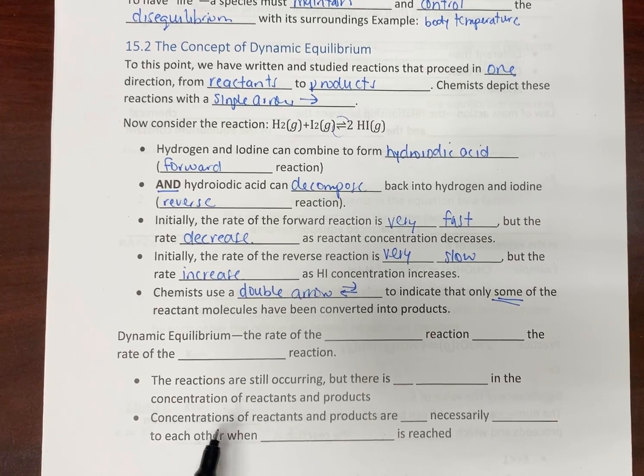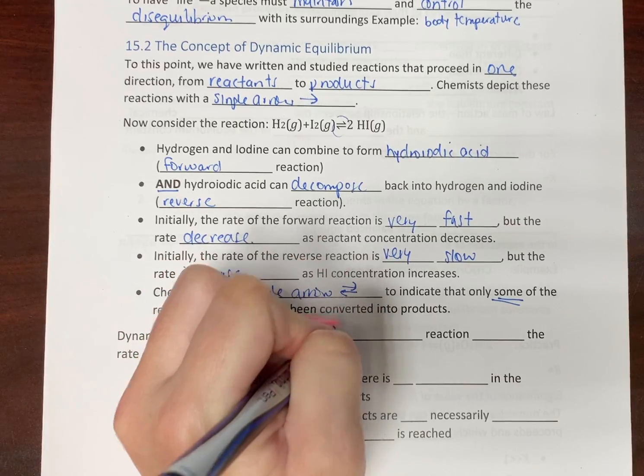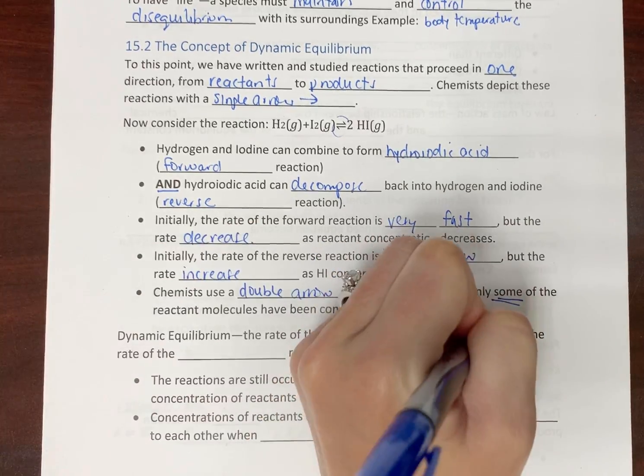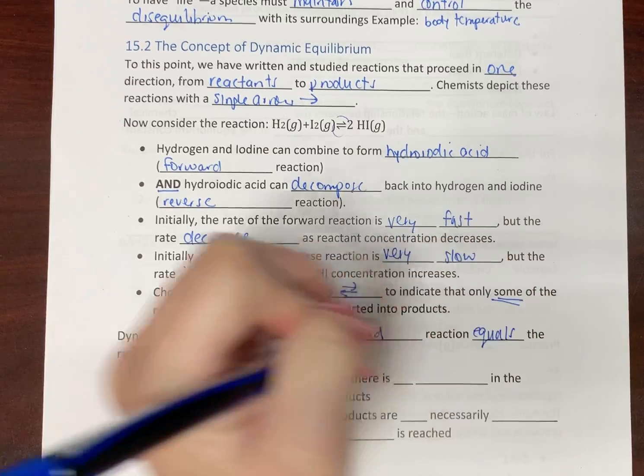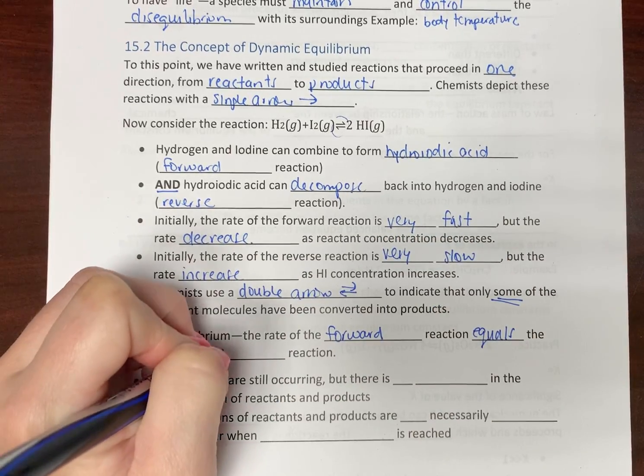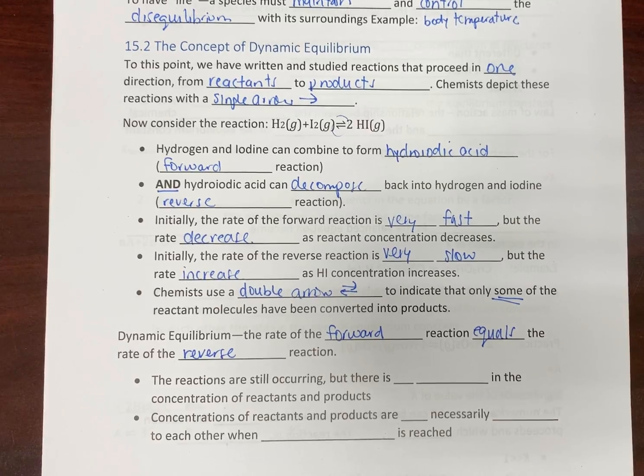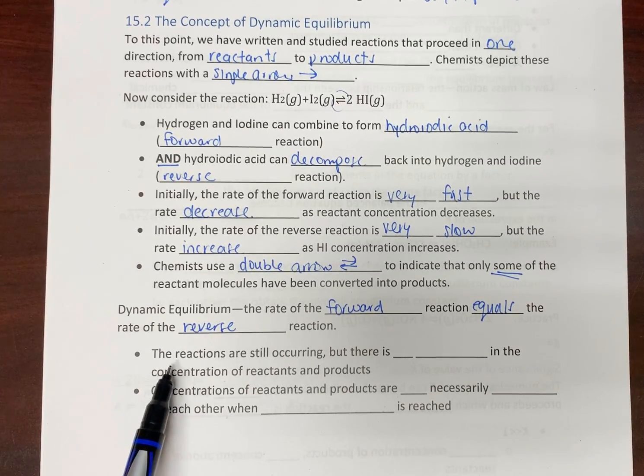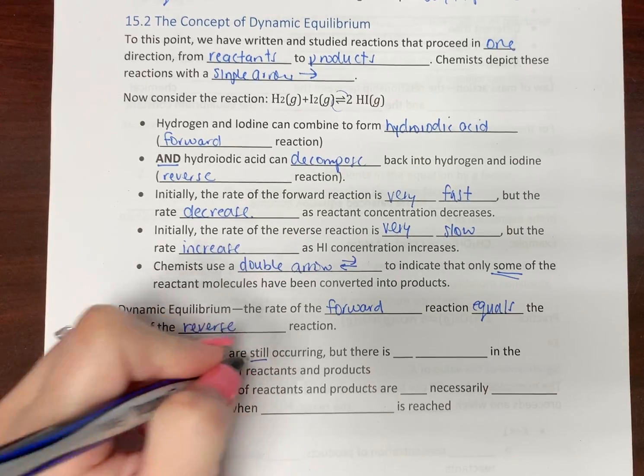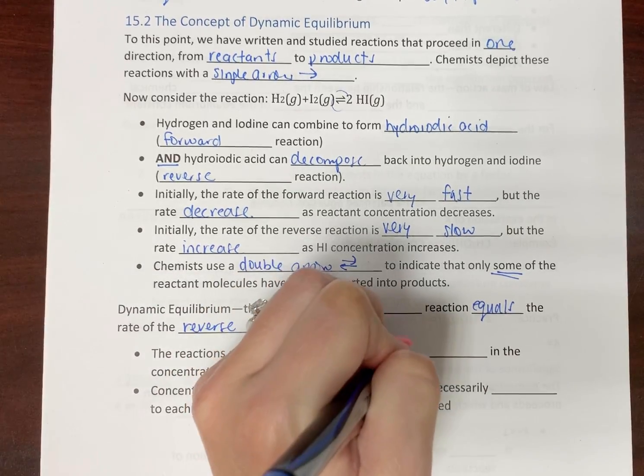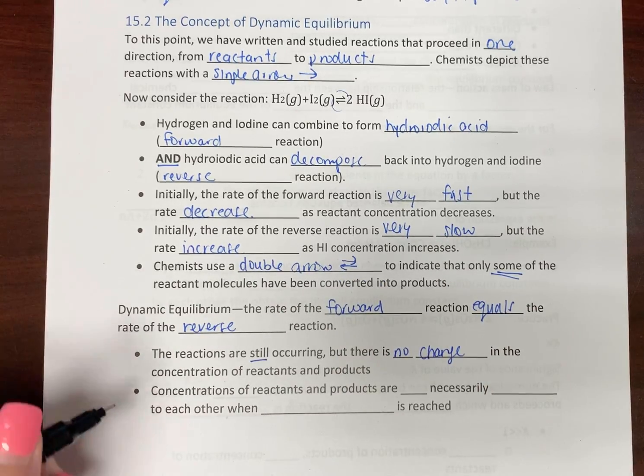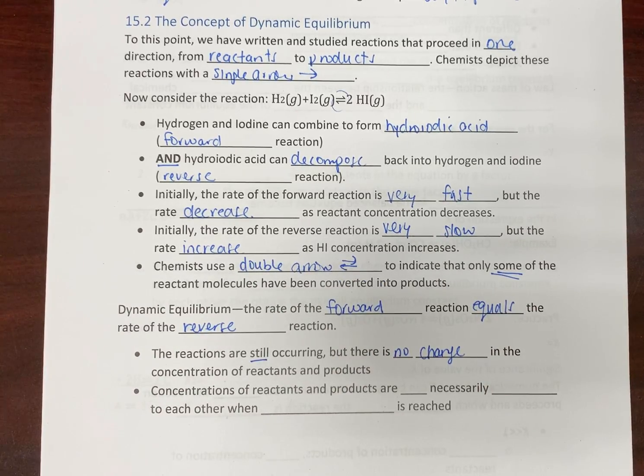We talked about the concept of dynamic equilibrium, and that is where the rate of the forward reaction equals the rate of the reverse reaction. When we're in this dynamic equilibrium, both of the reactions are actually still occurring, but there is no change in the concentrations of the reactants and the products. The reactions are still going on, but we can't see any effect of that.